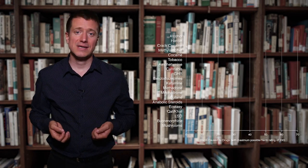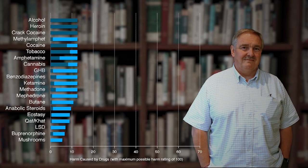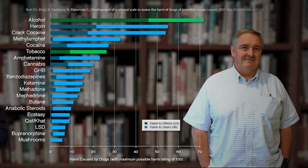Professor David Nutt and his colleagues assessed the risks of 20 popular illegal and legal substances. They found that some legal substances such as tobacco or alcohol were among the most harmful substances, while some illegal substances such as cannabis or ecstasy were among the least harmful substances.